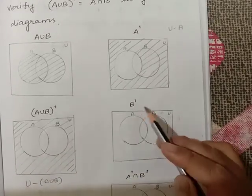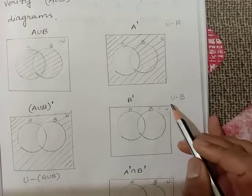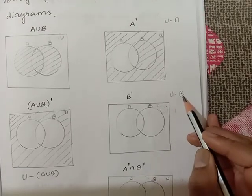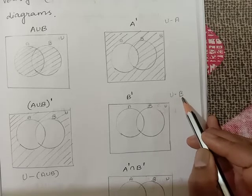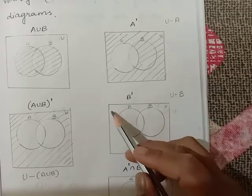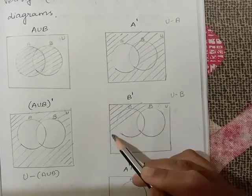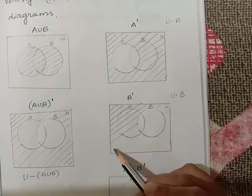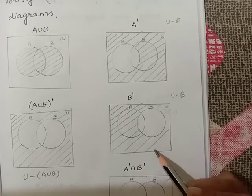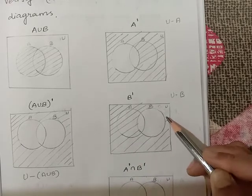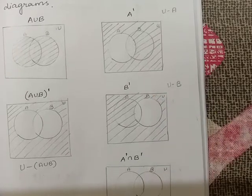Now what is B'? B' means universal minus B. We need the portion of universal but we don't want the portion of B. Omitting circle B and covering the remaining all portions gives you B'.